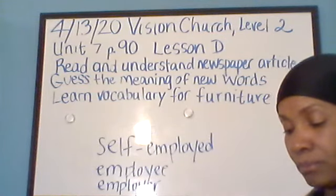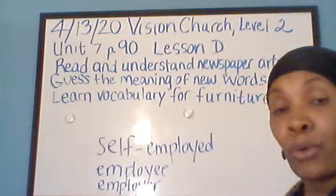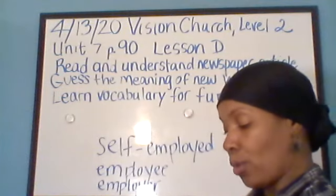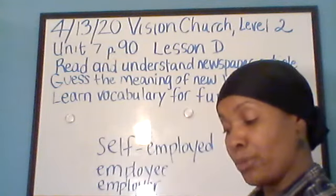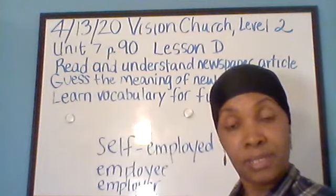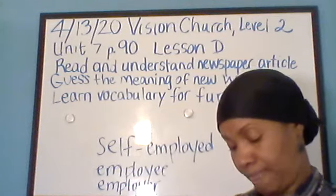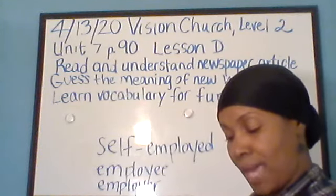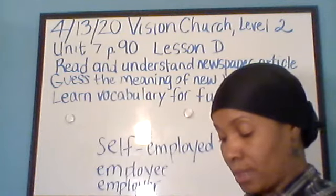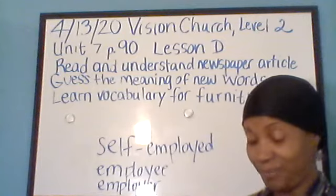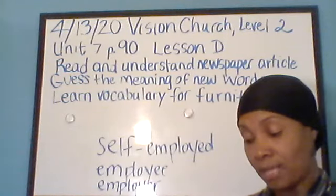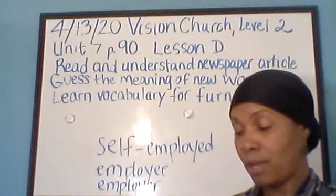Number five: what words in the reading help you understand the word appliances? The words stoves and refrigerators help you understand the word appliances. That is answering the question as a complete sentence. Number six: did Sammy have a lot of money five years ago? Why do you think so? No — Sammy didn't have a lot of money five years ago. He made a lot of money when he bought the van.